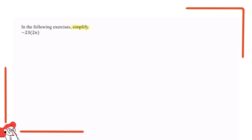The expression we're given is negative 23 times 2n. Now in order to do this question, here are some basic principles that you need to understand.